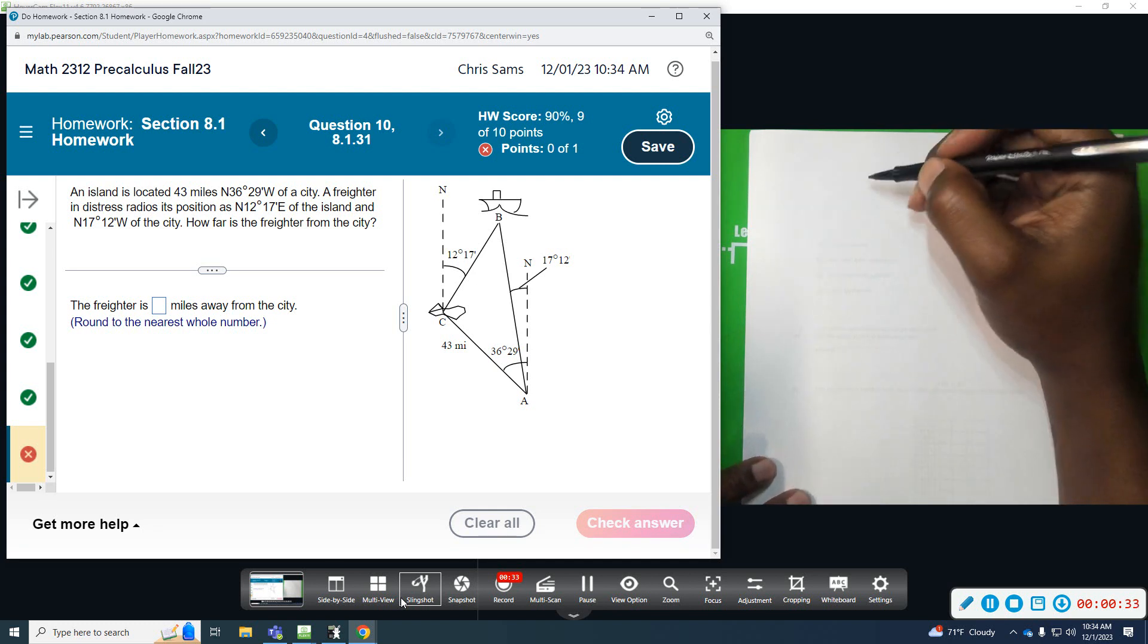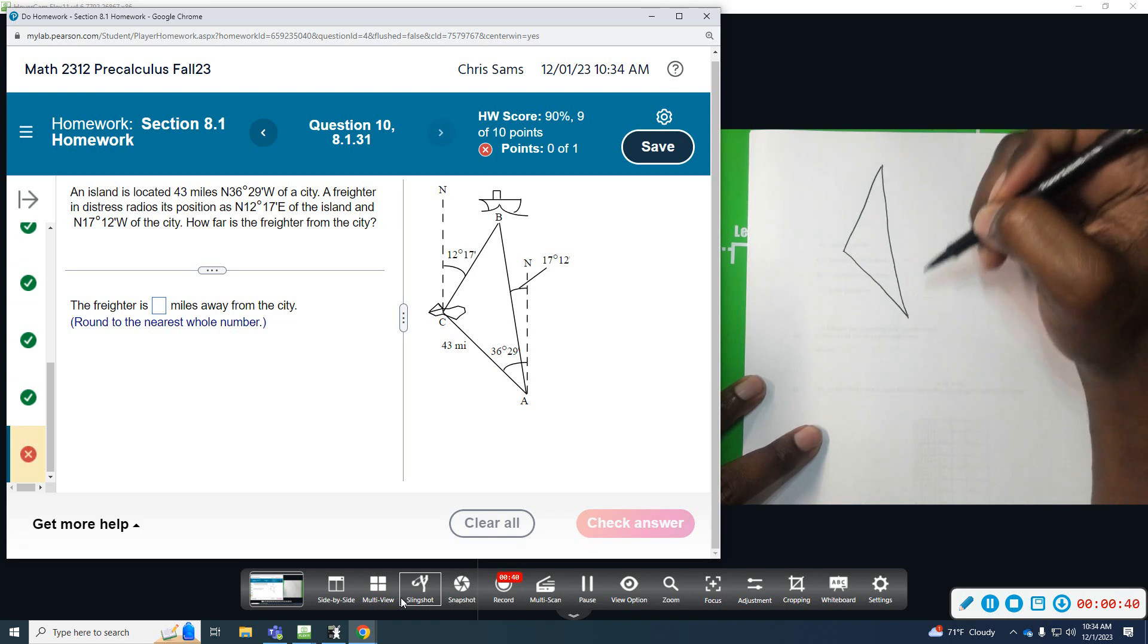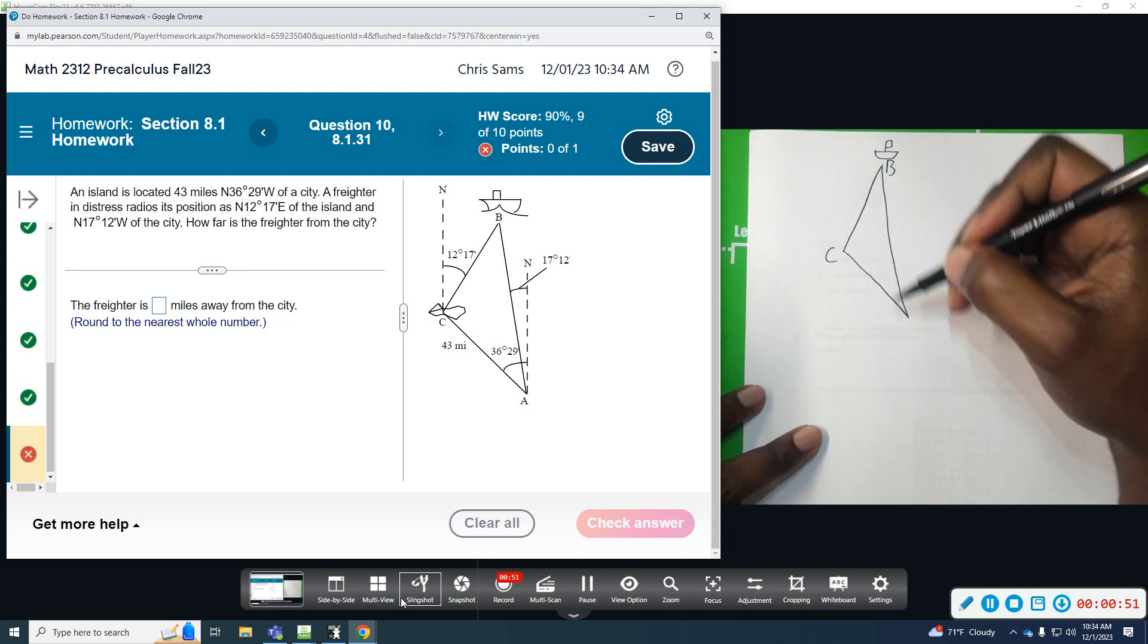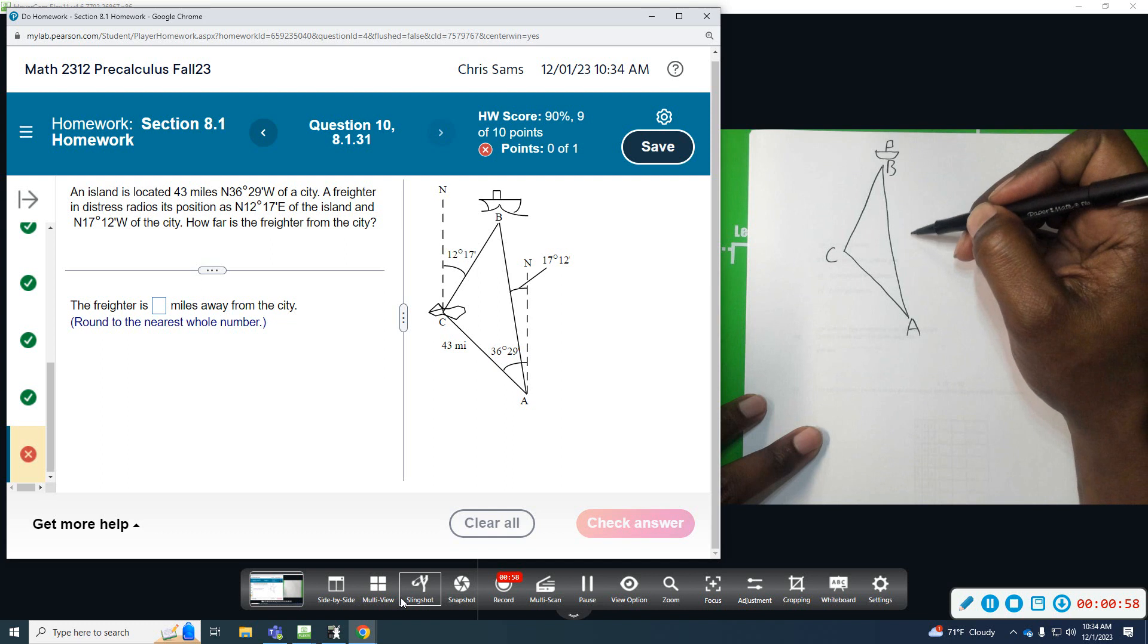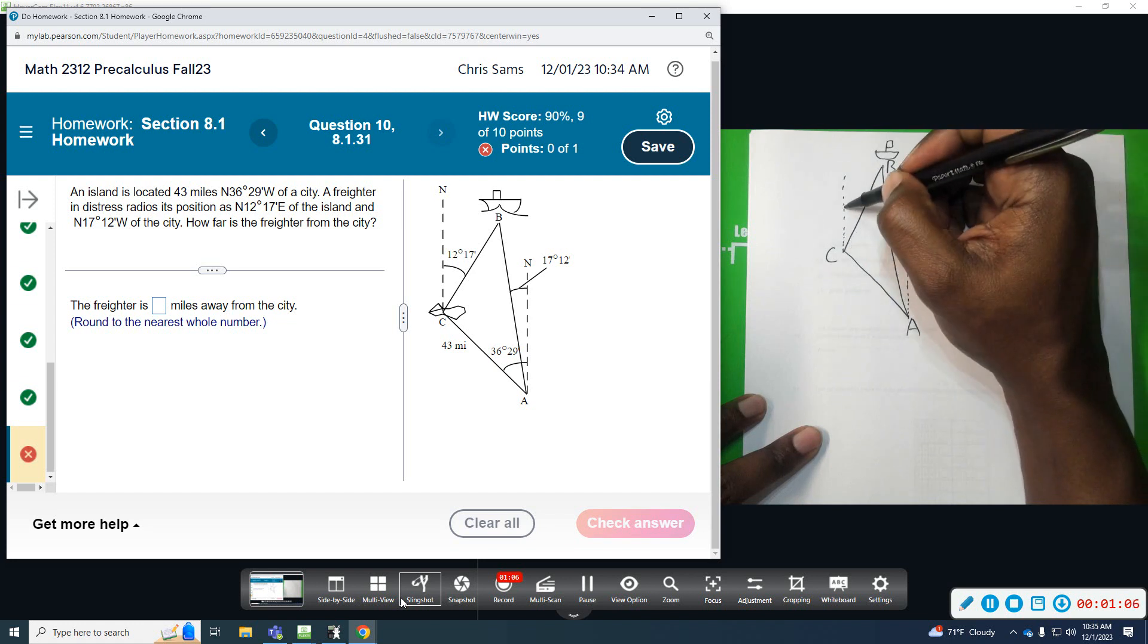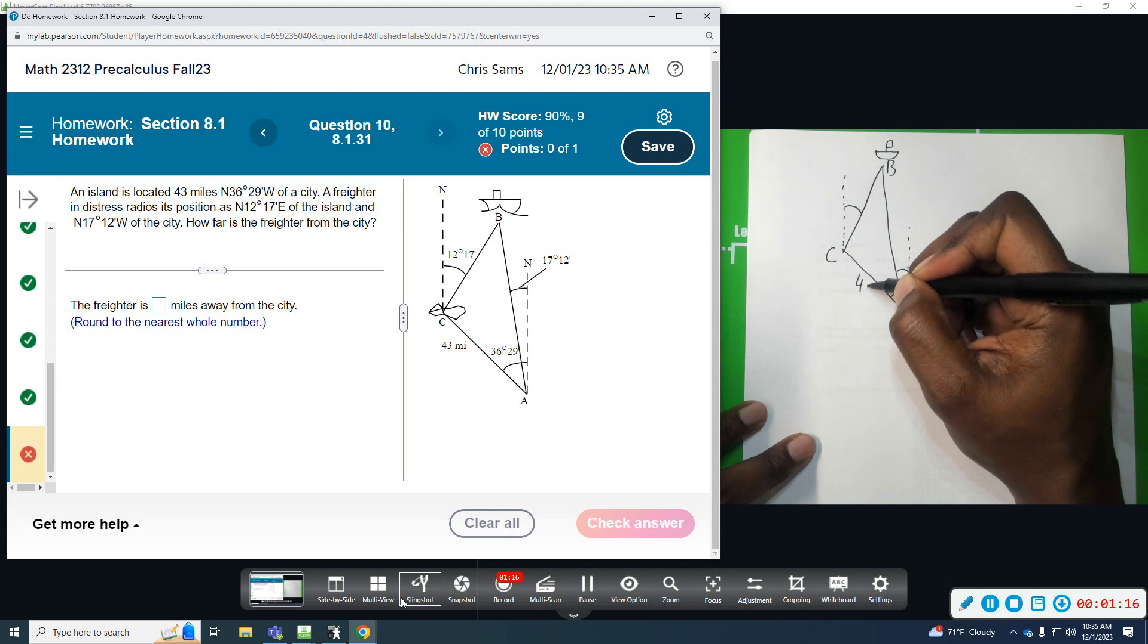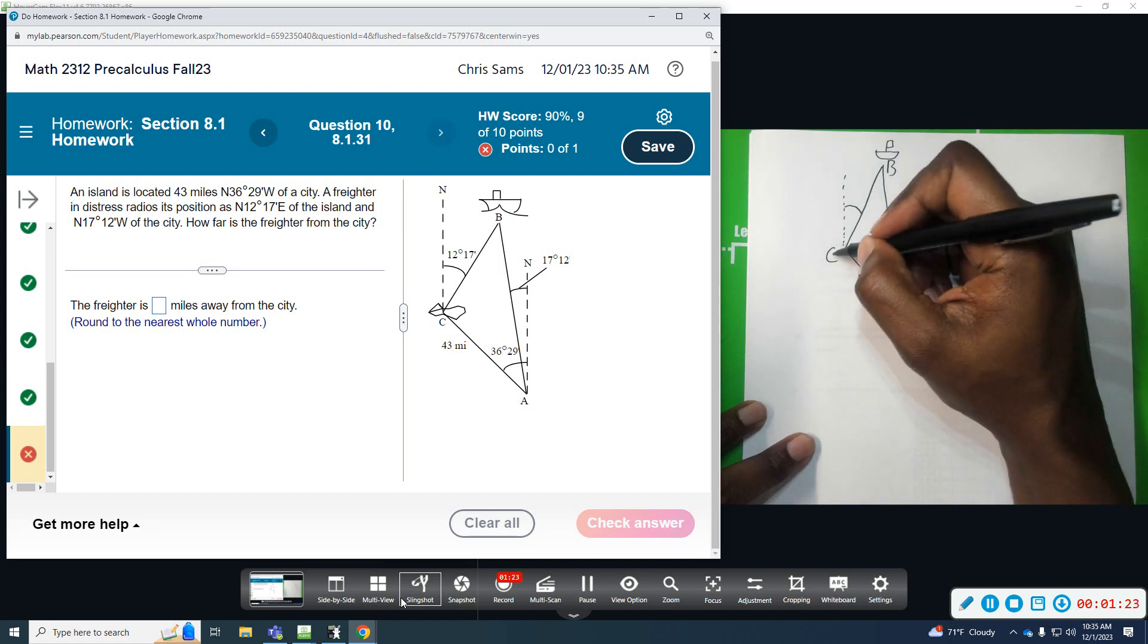So, according to the diagram, we have the freighter up here at B, looks like a little boat. We have some island C over here, and then we have the city down here, this is A. We kind of see some vertical lines, perpendicular, we're given some angle measurements. We're given the distance that the city is from the island, it's 43 miles. We want to know the distance from the city to the freighter, so this would be side C.